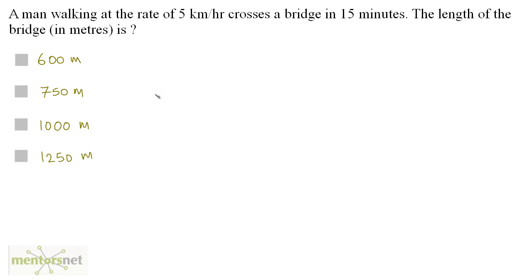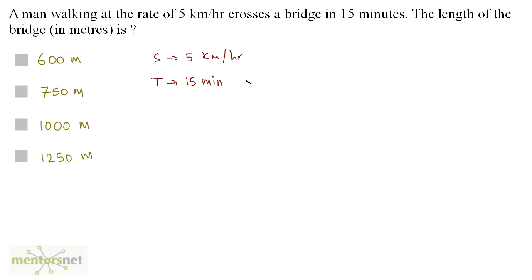A man walking at a rate of 5 kilometers per hour crosses a bridge in 15 minutes. What is the length of the bridge in meters? The speed is given as 5 kilometers per hour and the time is 15 minutes. Since the time is in minutes and the speed is in kilometers per hour, either convert the speed into kilometers per minute or convert time into hours. We are going to convert 15 minutes into hours, which turns out to be 1 by 4 hours.